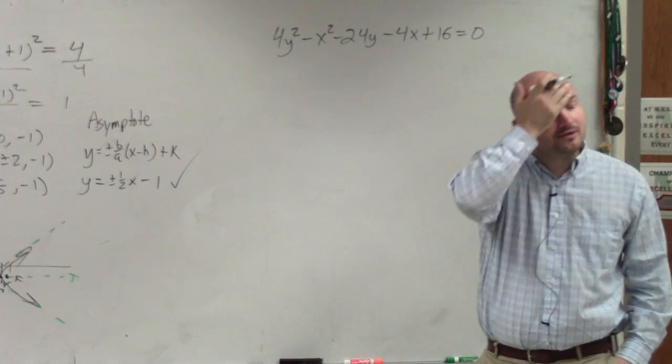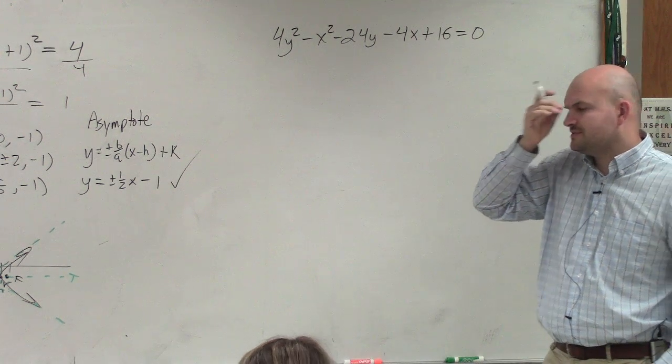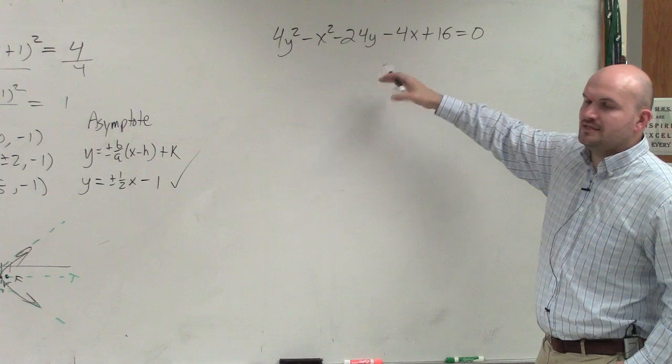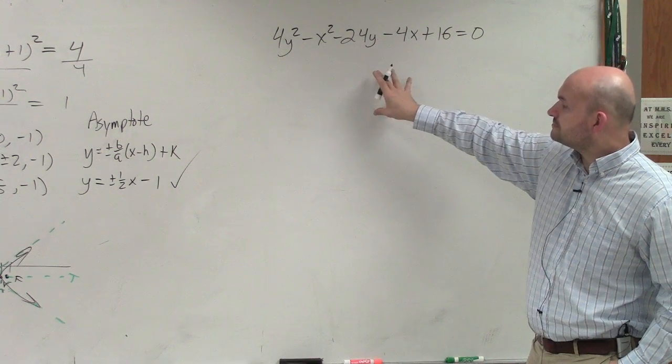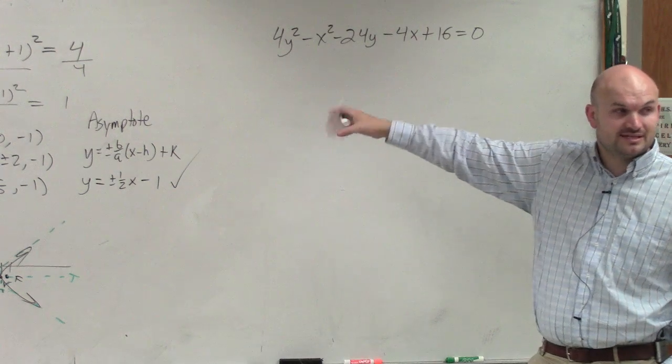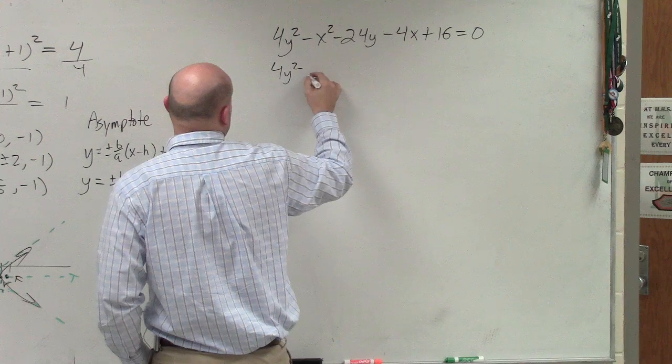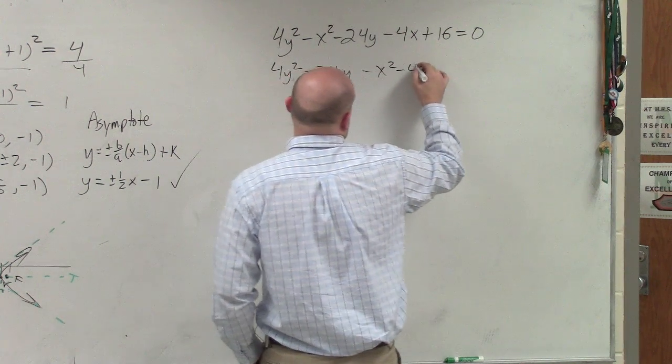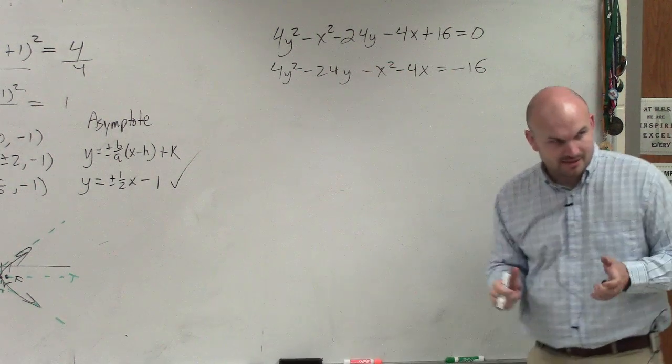So let's go ahead and group your x's and your, I really have no idea actually. I think it's actually like 15 or 13. So the main important thing we want to do in this case guys is group your variables. So we group your 4y² - 24y - x² - 4x = -16. Usually everybody does good on that side.